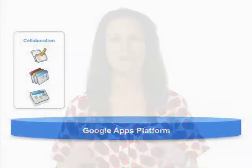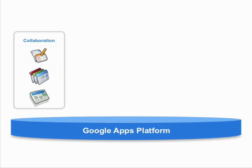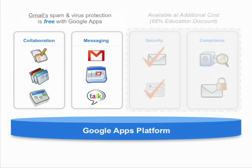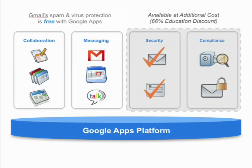So what is Google Apps? We start with the Google Apps platform and then add a bunch of collaboration tools. These include Google Docs — our word processing, spreadsheet, and presentation tools — Google Sites, a collaborative team working environment, and the Google personalized start page. Then we add a bunch of communication tools: Google Mail, Google Calendar, and Google Talk. We also have a set of security and compliance tools that we can add to the package for an additional cost.